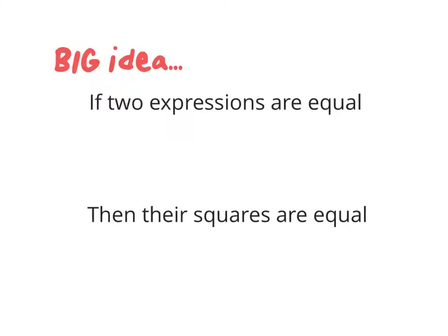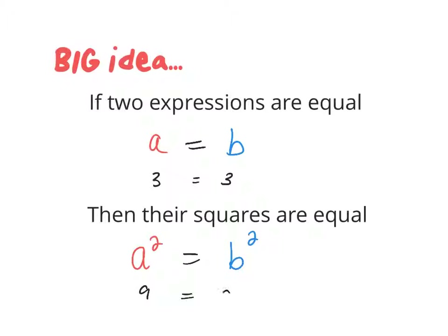So the big idea today: if two expressions are equal — say A is equal to B — then if I take those numbers and square them, they'll also be the same, and that'll work for any number. For example, if 3 equals 3, then squaring gives 9 equals 9. If negative 1 equals negative 1, squaring both sides still gives the same result. So we're going to use that today to undo square roots.